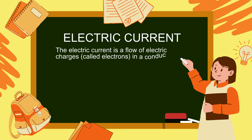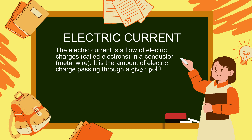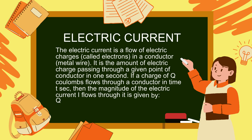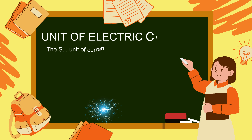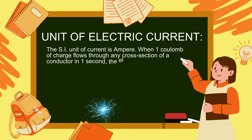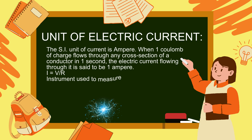Electric current is a flow of electric charges — electrons — in a conductor or metal wire. It is the amount of electric charge passing through a given point of a conductor in one second. If a charge of Q coulombs flows through a conductor in time T seconds, the magnitude of electric current I is given by I = Q/T. The SI unit of current is the ampere. When one coulomb of charge flows through any cross-section of a conductor in one second, the current is one ampere.